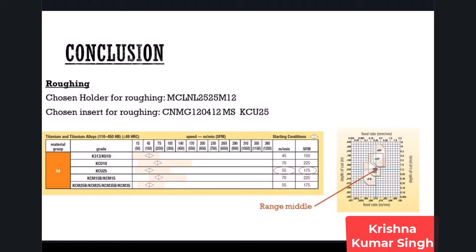For roughing, you can use a depth of cut of 1 mm, or 0.04 inches, and a feed of 0.25 mm per revolution or 0.01 inches per revolution. I have drawn blue lines on the catalog page for easy reference, since our roughing insert grade is KCU-25. The catalog gives a surface cutting speed of 55 meters per minute or 175 feet per minute for roughing.